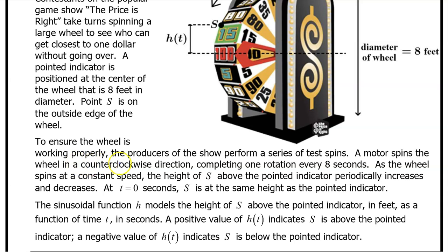To ensure the wheel is working properly, the producers of the show perform a series of test spins. A motor spins the wheel in a counterclockwise direction, completing one rotation every eight seconds. As the wheel spins at a constant speed, the height of S above the pointed indicator periodically increases and decreases. At t equals zero seconds, S is at the same height as the pointed indicator.